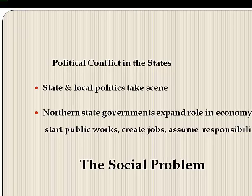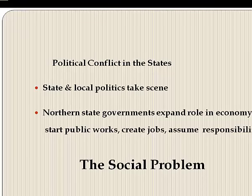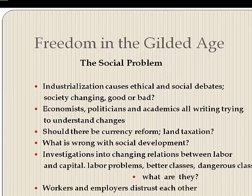Protests against railroads among farmers and local merchants suffering high freight rates led to the formation of the Patrons of Husbandry, known as the Grange, founded in 1867. The Grange established cooperatives for storing and marketing farm products in order to force railroads to lower prices, and in some states pressured state legislators to investigate and regulate railroad rates.